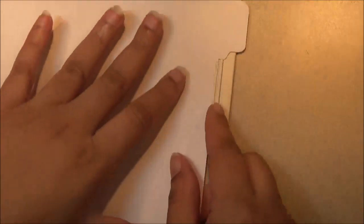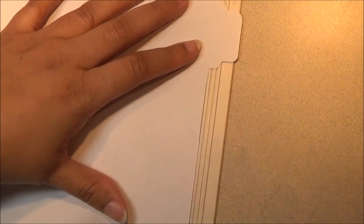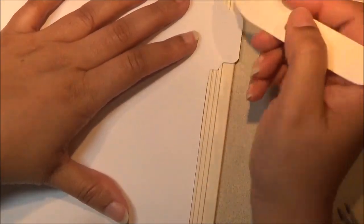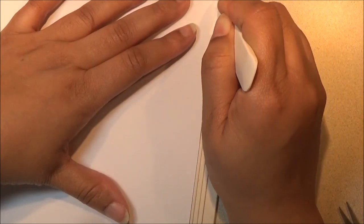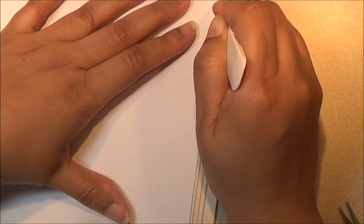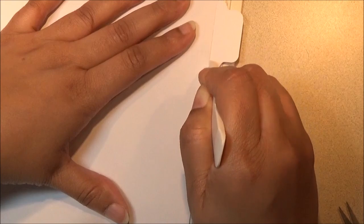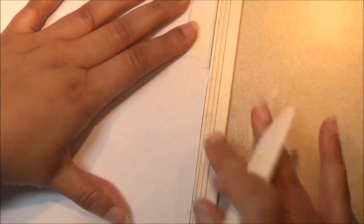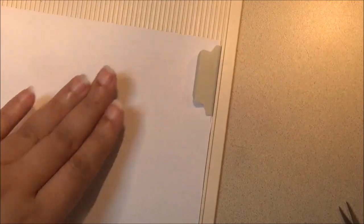So what you'll need to do is score the little tabs on each side. I'm going to take my little scoring tool and just give it a score right here and we're going to flip that in like so.